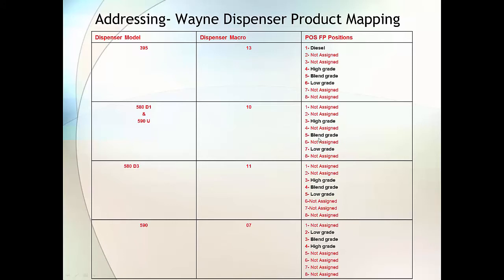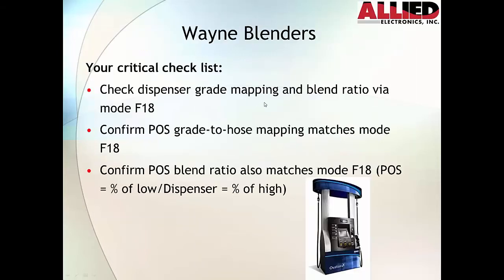The same thing with the blended grade if it didn't match this. A lot of times what happens is we don't have the luxury of knowing, especially with the Ovation dispensers, how they're mapped, because they can come mapped from the factory with a different mapping scheme.